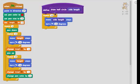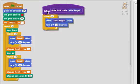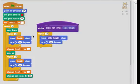I made a new block called draw half circle. What I do in there is just exactly what I did here. I repeat 18 times, I move some number of steps and I turn 10 degrees. So anywhere where this half circle appears I can replace it with a draw half circle block.